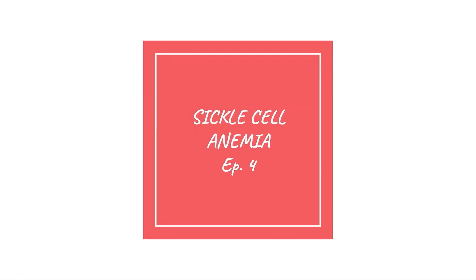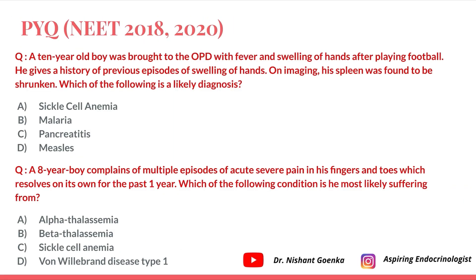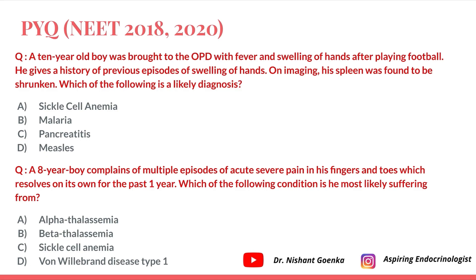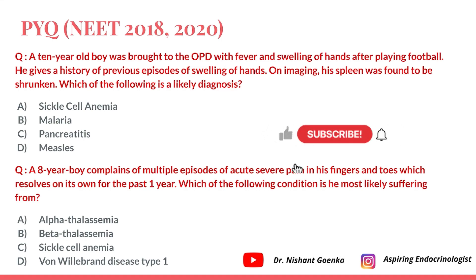Going back to the questions: the 10-year-old boy with fever, swelling of hands, previous history of swelling, and a shrunken spleen on imaging — the shrunken spleen depicts autosplenectomy, pointing to sickle cell anemia. The 8-year-old boy with multiple episodes of acute severe pain in fingers and toes depicts dactylitis — again sickle cell anemia. I hope this video was useful. Keep studying, keep revising, and I'll see you in the next episode!